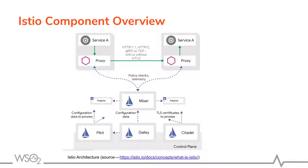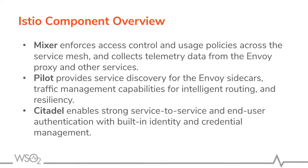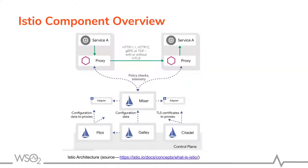Pilot is in the control plane. When you need to update proxies or any other component, you communicate with Pilot and let it propagate those policies to the proxies to control your entire system. Another component, Citadel, enables security — service-to-service security, authentication, mutual TLS — all handled by Citadel. It manages TLS certificates and passes them to proxies.